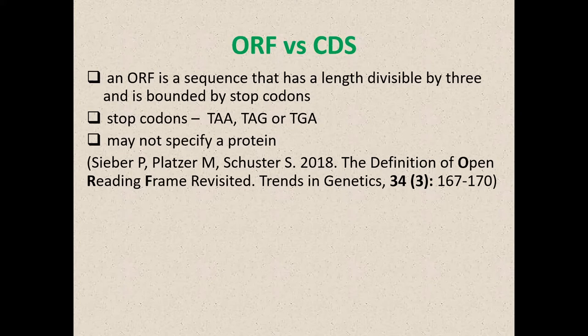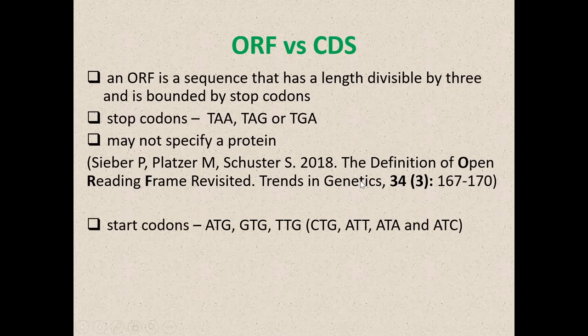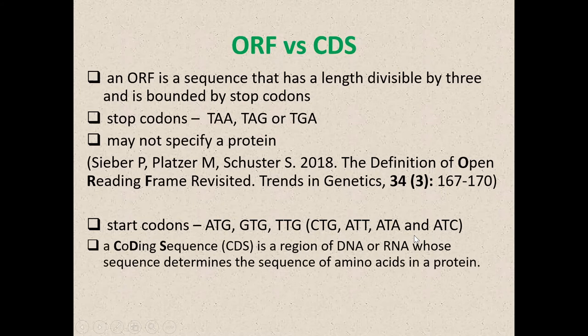ORFs versus CDSs: an ORF is a sequence divisible by three, bounded by stop codons. Stop codons are universal, and it may or may not encode a protein. The difference with a coding sequence is there will be a start codon up front — usually ATG or GTG, sometimes TTG, and sometimes other rare ones. So the coding sequence is a subset of ORFs which encodes for proteins.